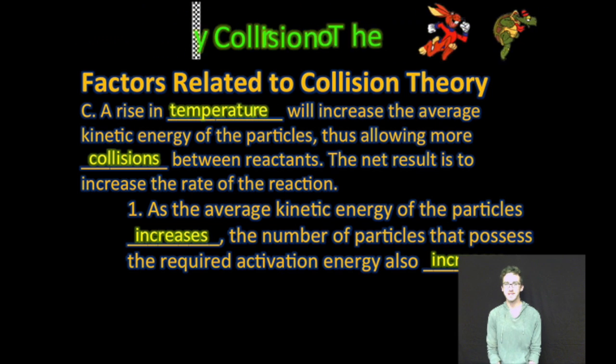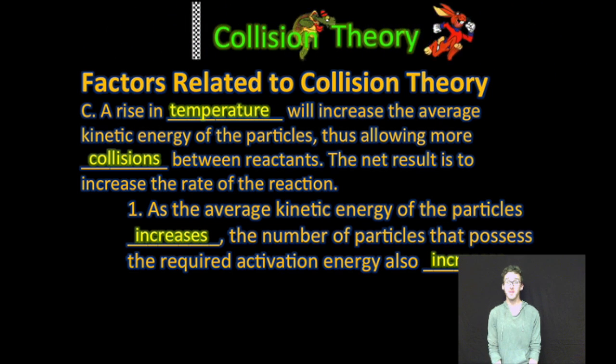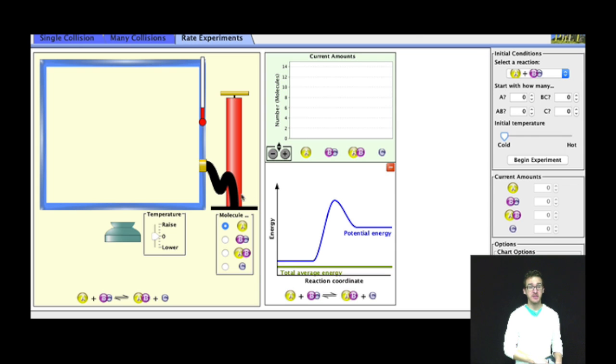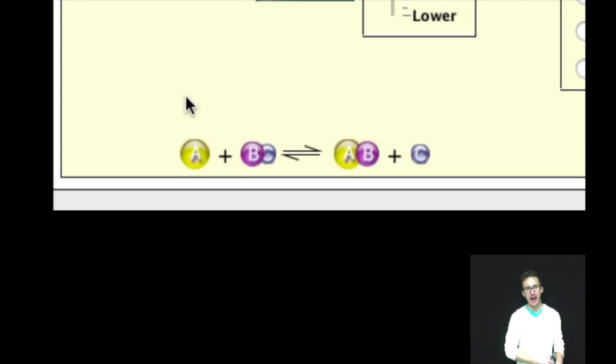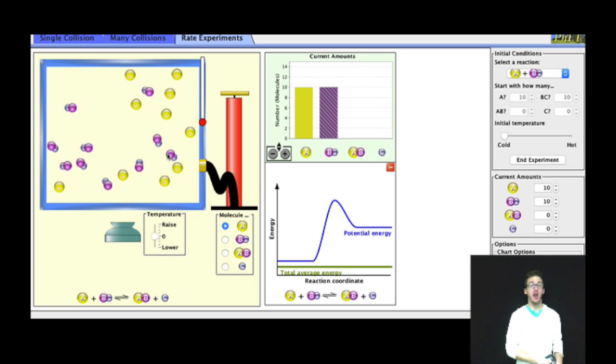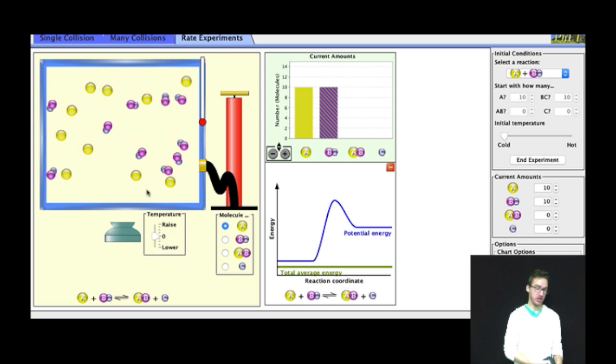Three, recognize that a rise in temperature will increase the average kinetic energy of the particles, thus allowing more collisions between reactants. All right, now let's take a look at this generalized reaction that occurs between element A and compound BC. I'm going to start us off at a very low temperature. Notice my particles are moving very slowly. Not a lot of effective collisions. Not a lot of product formation.